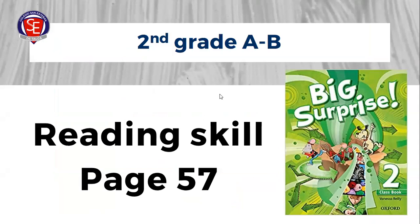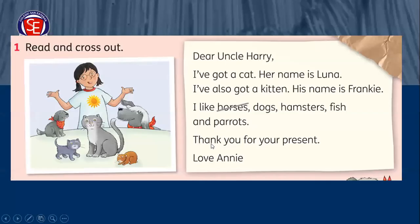Ahora, niños, vamos a abrir el libro en la página número 57. You have to open your book on page number 57. In page number 57, exercise number one says: read and cross out. Tenemos que leer y tachar los animales que no están en esta fotografía. Here we have a friend in this picture — tenemos a nuestra amiga que está con una polera con un sol. Y dice: dear Uncle Harry — querido tío Harry. Está enviando una carta a su querido tío Harry.